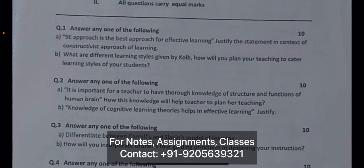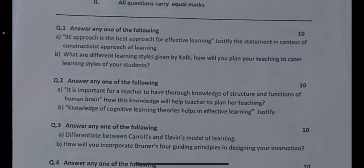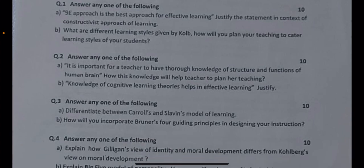Let's start with question number one: answer any one of the following. Part A: the 9E approach is the best approach for effective teaching — justify the statement in the context of the constructivist approach of learning. Part B: what are the different learning styles given by Kolb? How will you plan your teaching to cater to the learning styles of your students?